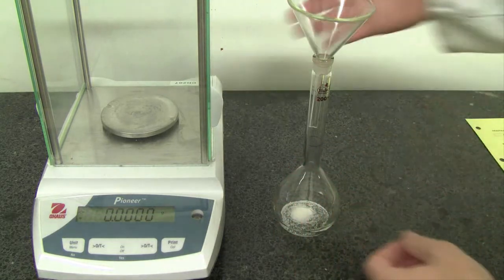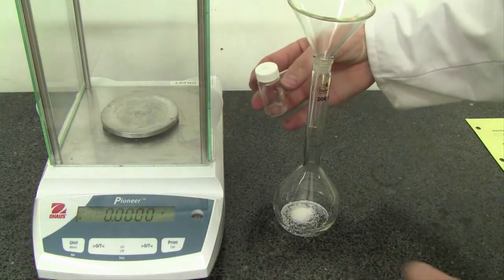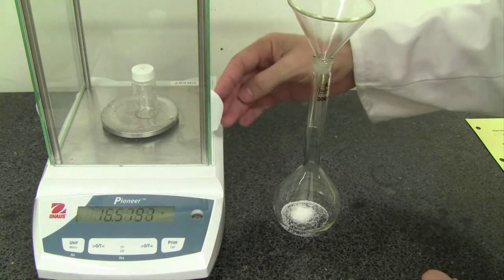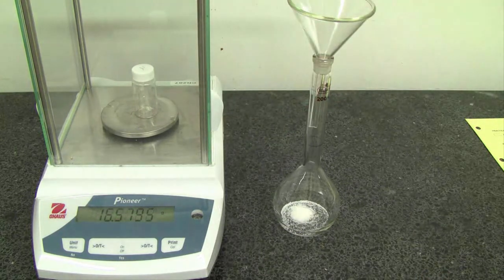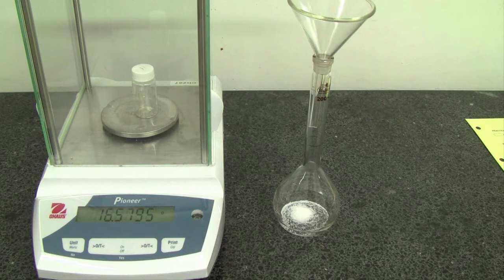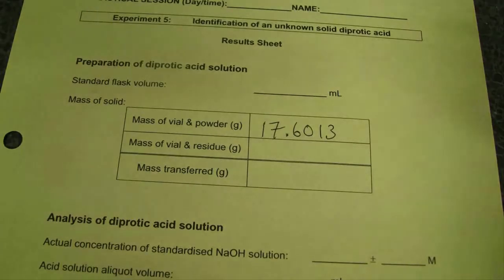Make sure your balance is still zeroed, pop your sample vial back in there, and we're now going to weigh the sample vial minus the powder that you've delivered. So record that mass: 16.5796 grams. Straight into the result sheet.